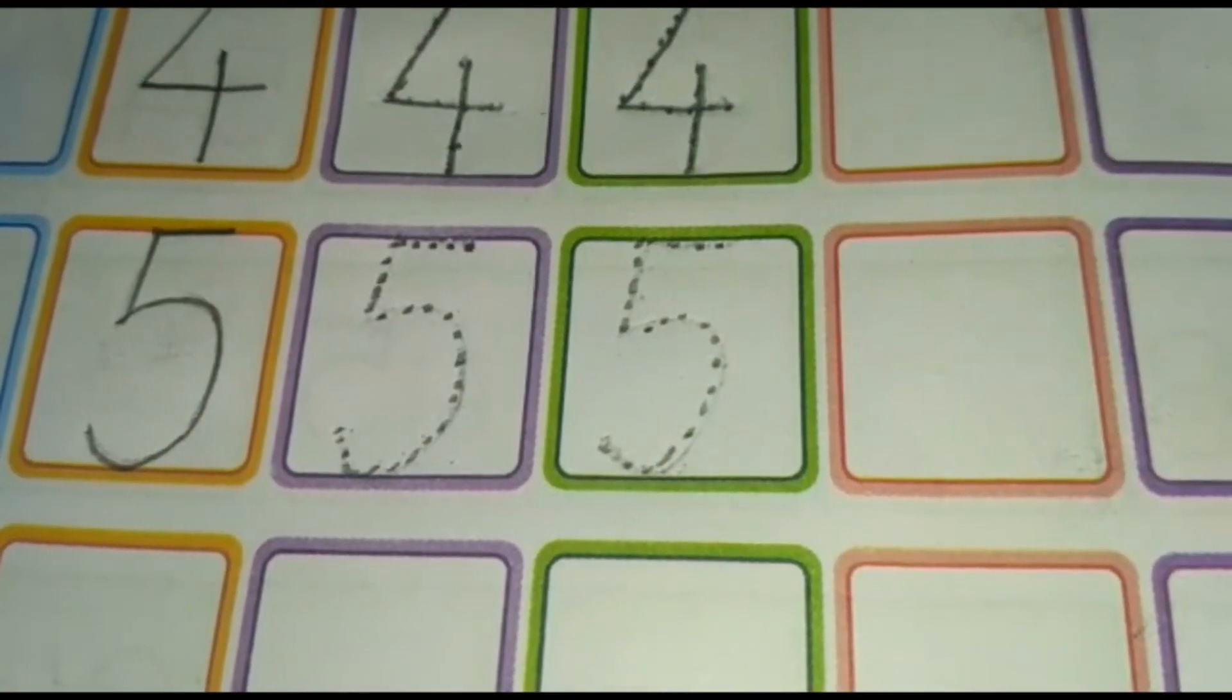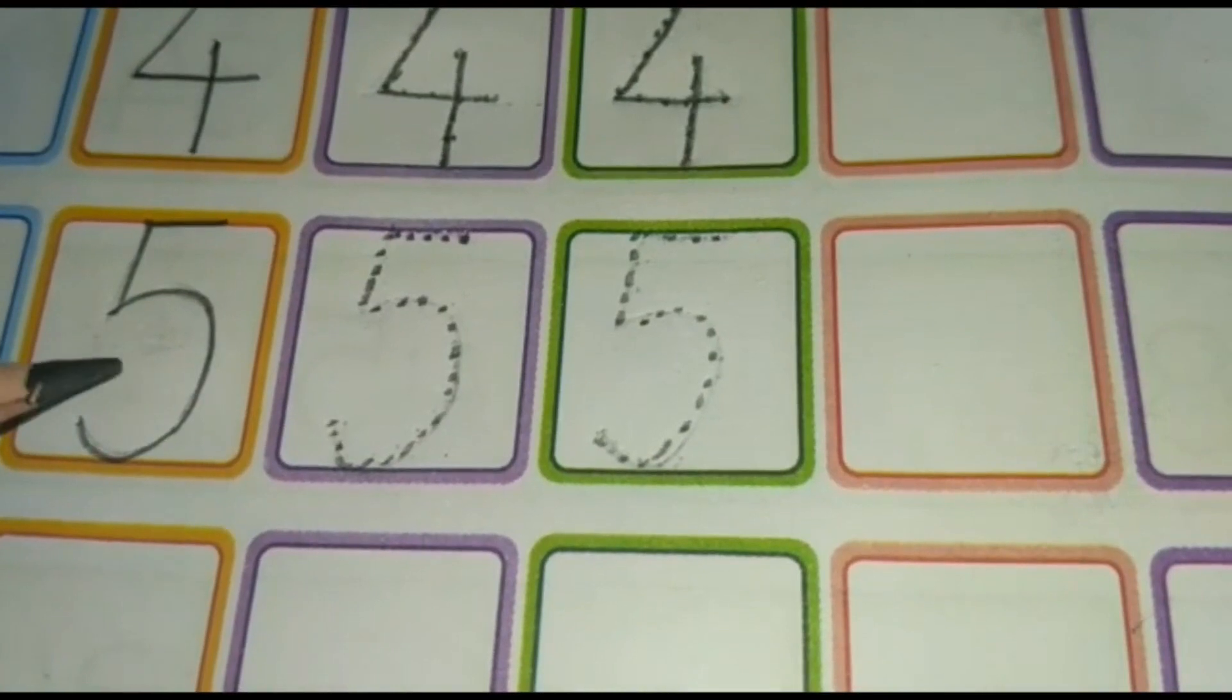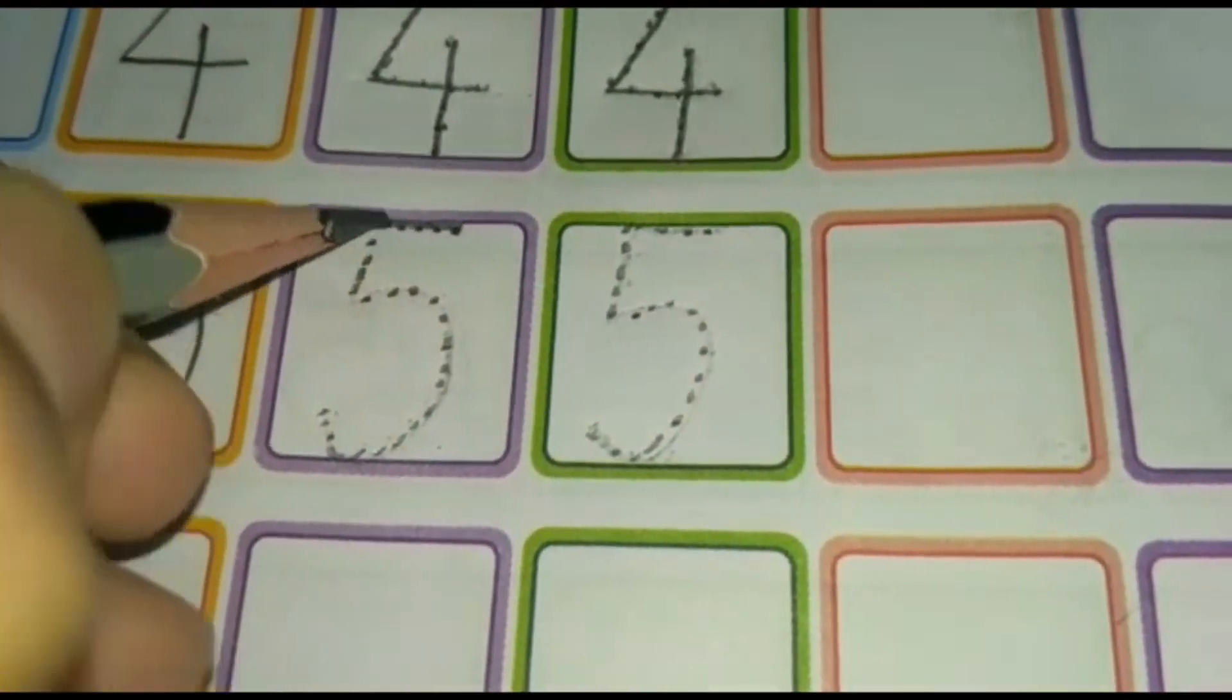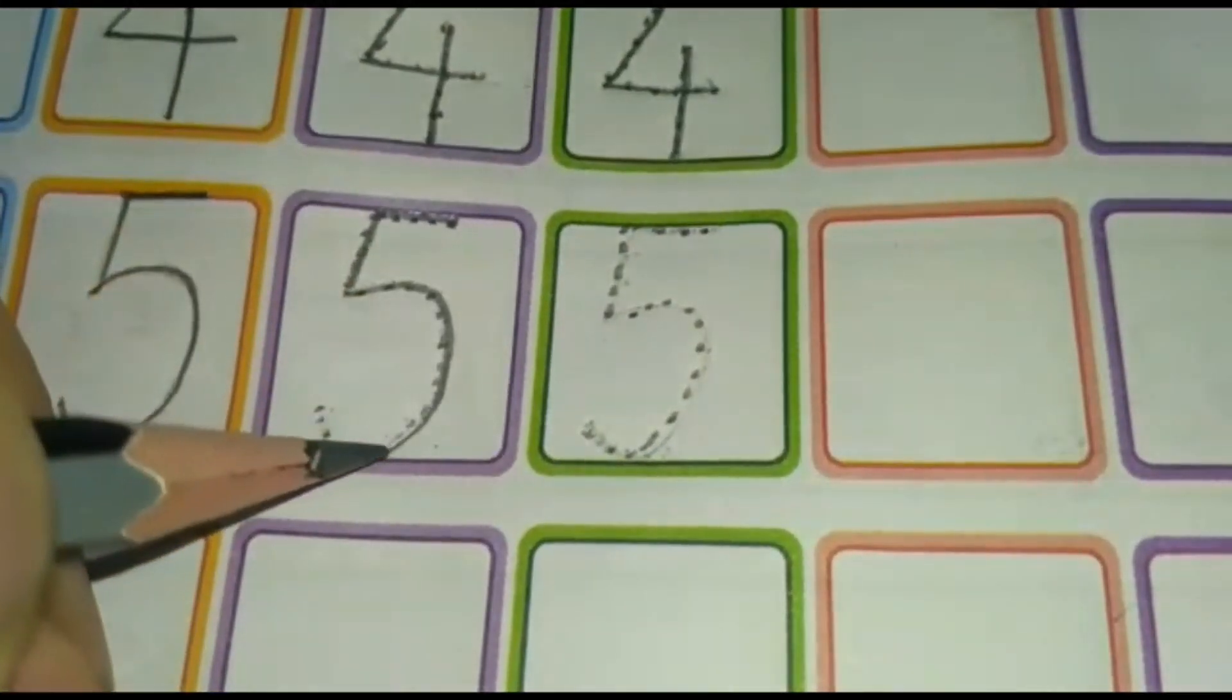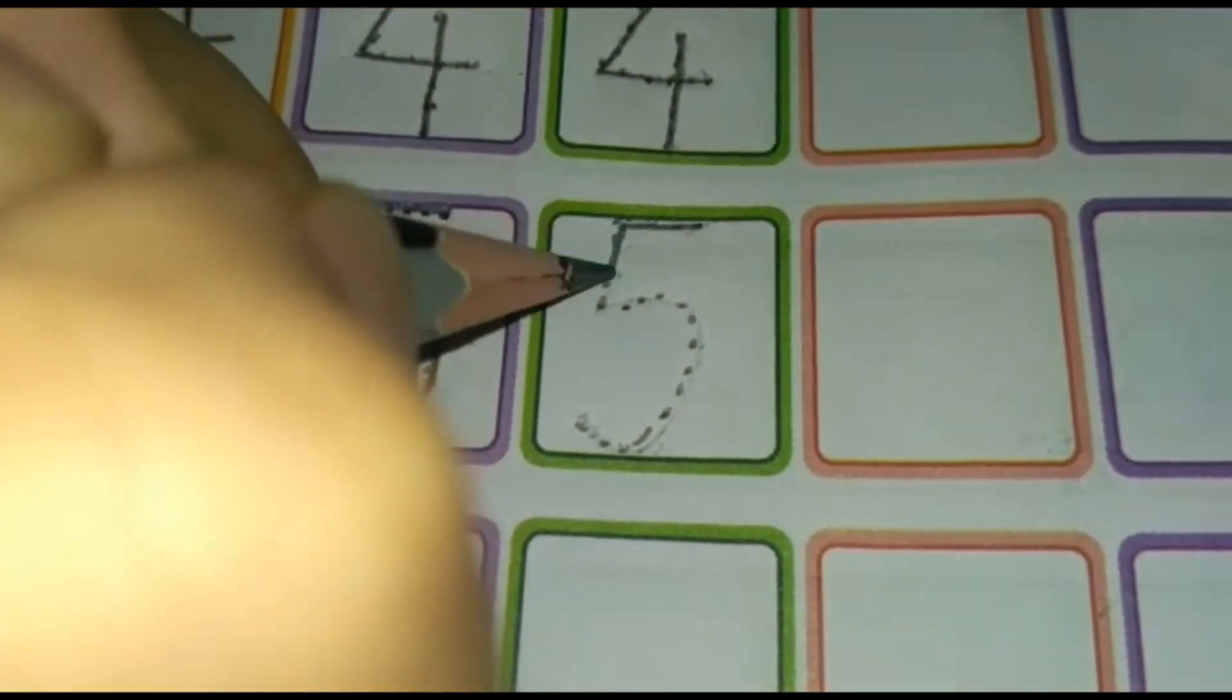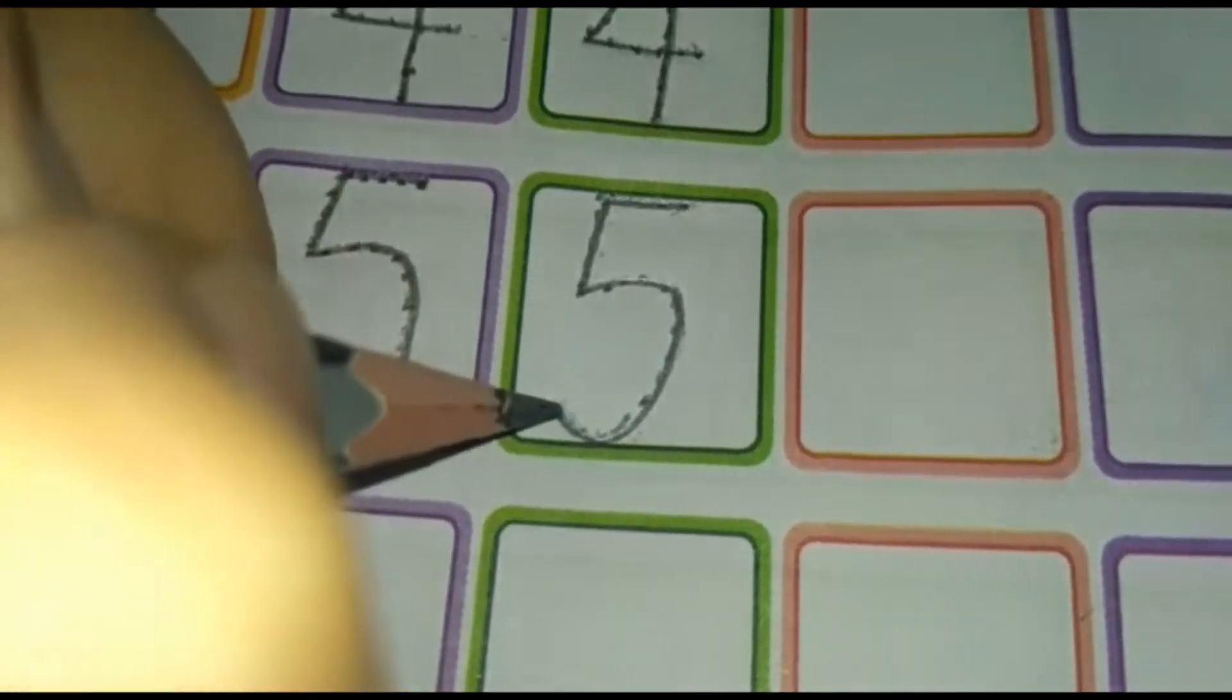Now, what comes after the number four? Yes, number five. One sleeping line, one slanting line and a curve. A slanting line makes the number five. A sleeping line, a slanting line and a curve. Yes, we did it.